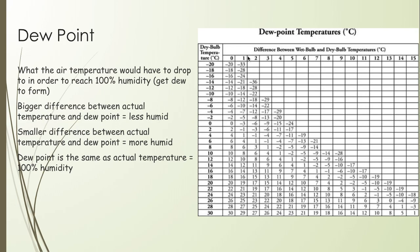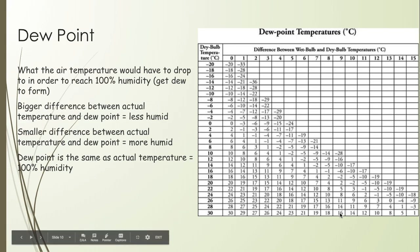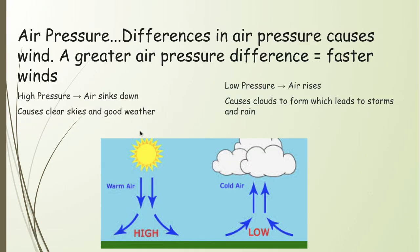If your dew point is the same as your actual temperature, you are at 100% relative humidity. And remember, if there's no difference between the wet bulb and the dry bulb temperature, that means it's 100% relative humidity — your dew point is the same as the dry bulb. A bigger difference leads to a lower dew point.